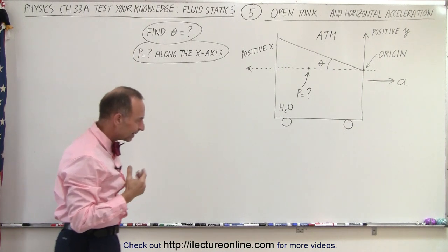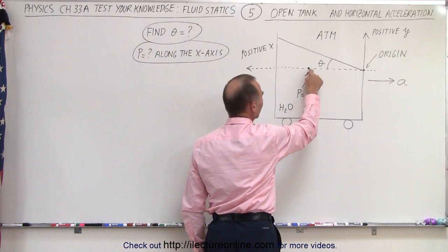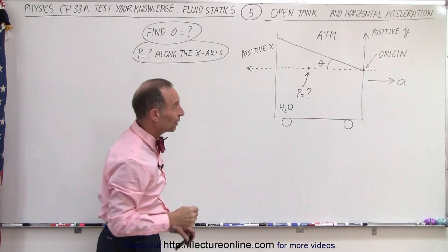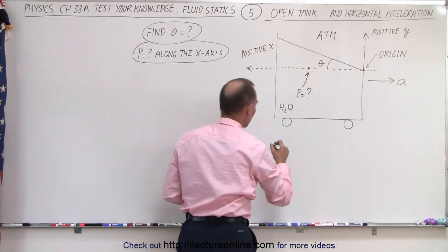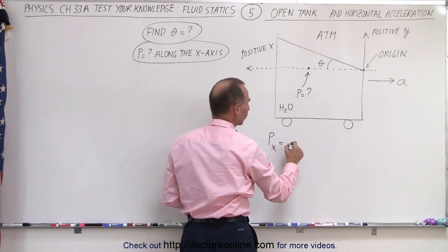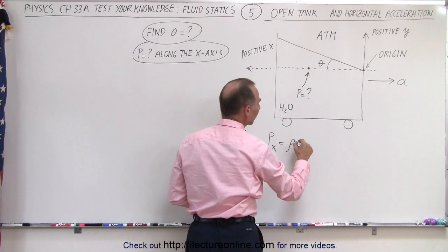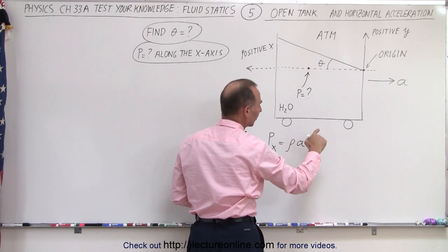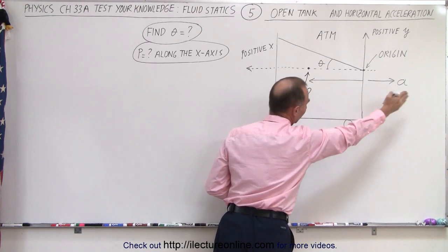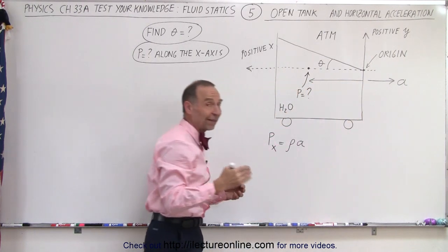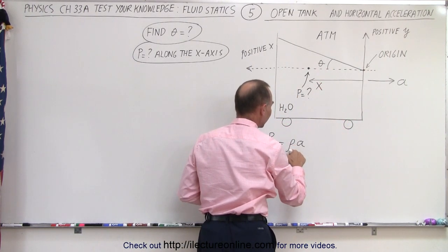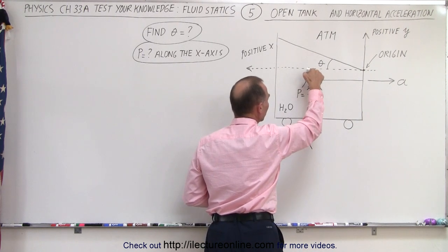Well, it's kind of like this. If we pick a particular point and try to figure out the pressure, due to the acceleration to the right we can do that exactly as we did in the previous video. We know that the pressure in the x-direction is equal to the density of the liquid times the acceleration times the distance x from the right side of the tank, where the origin is placed. So pressure equals ρ·a·x at that point.